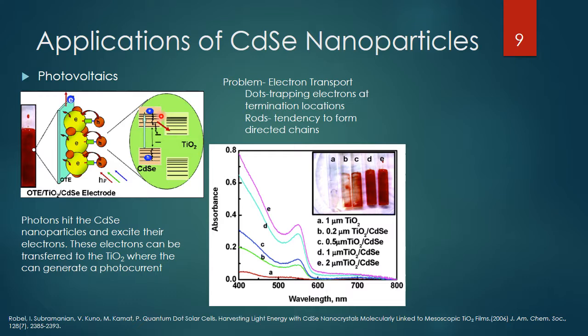This is something that the rods are actually pretty good at. The rods have a tendency to form directed chains so that the rods kind of line up together, and then it's a lot easier for the electrons to move between these different rods.